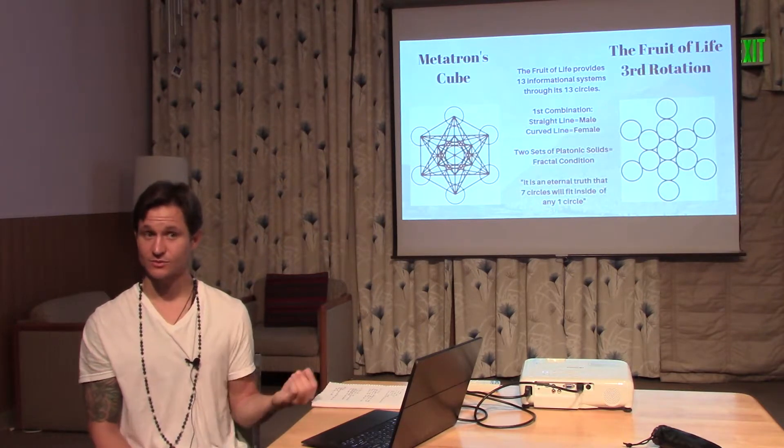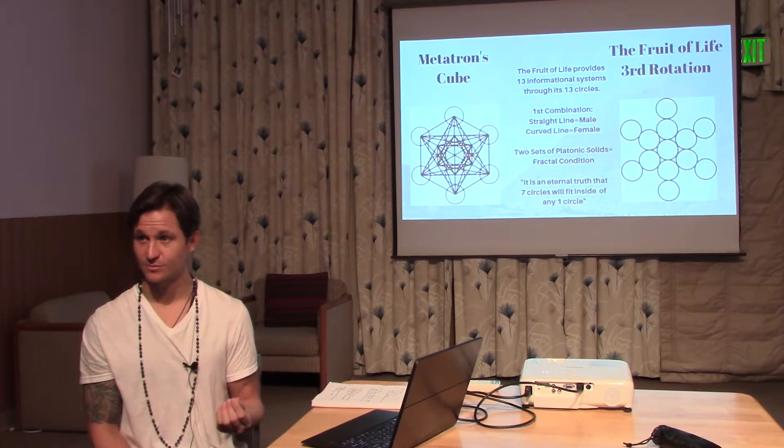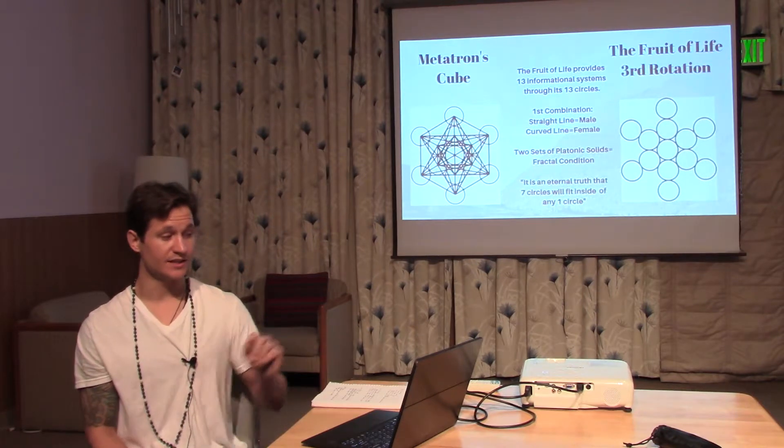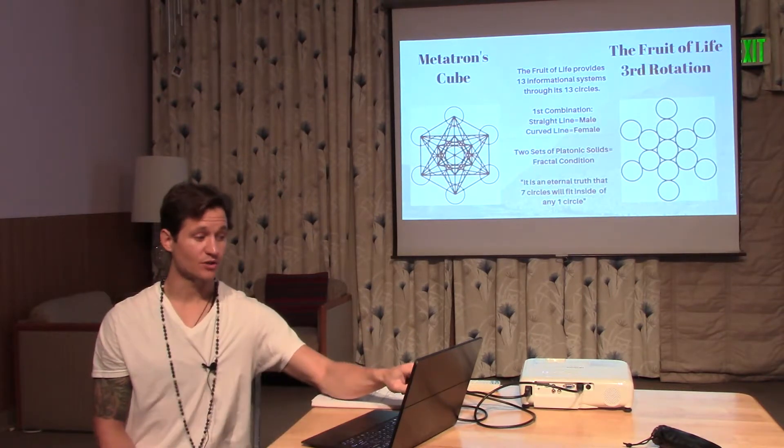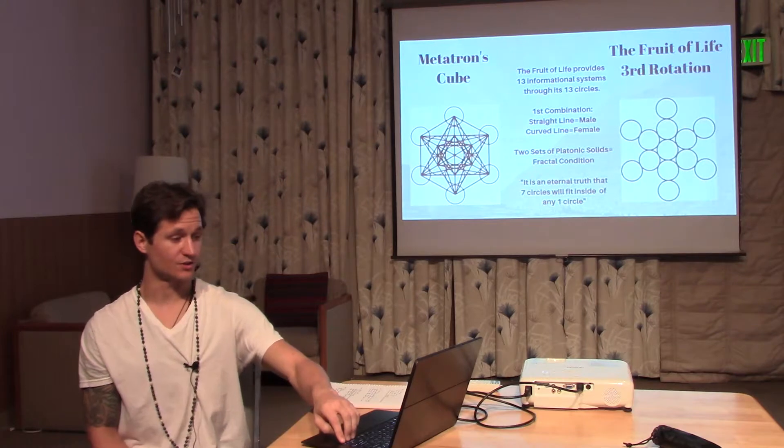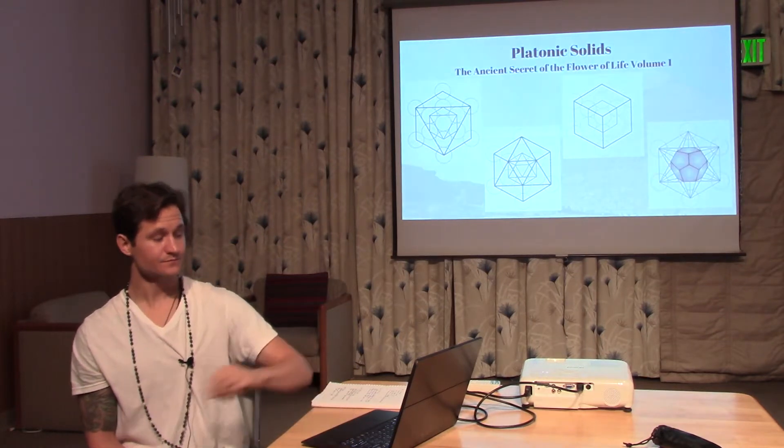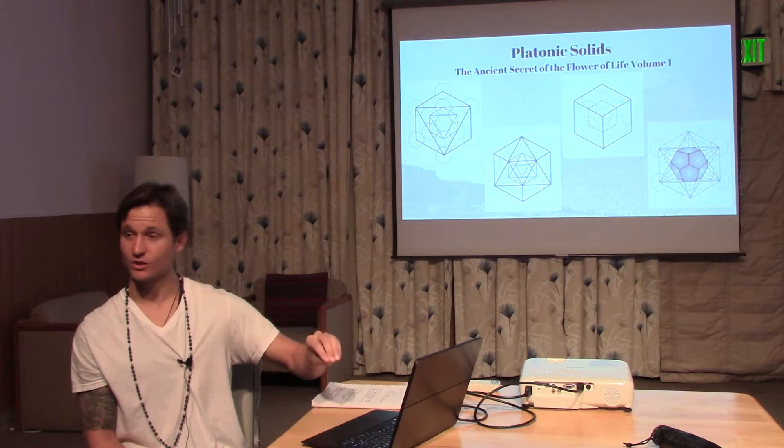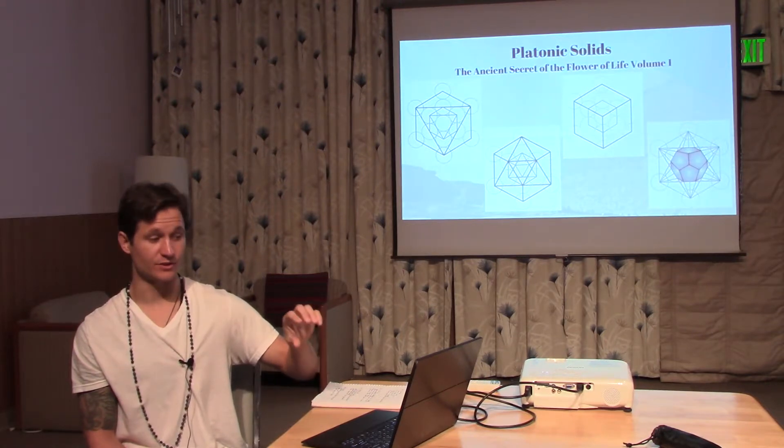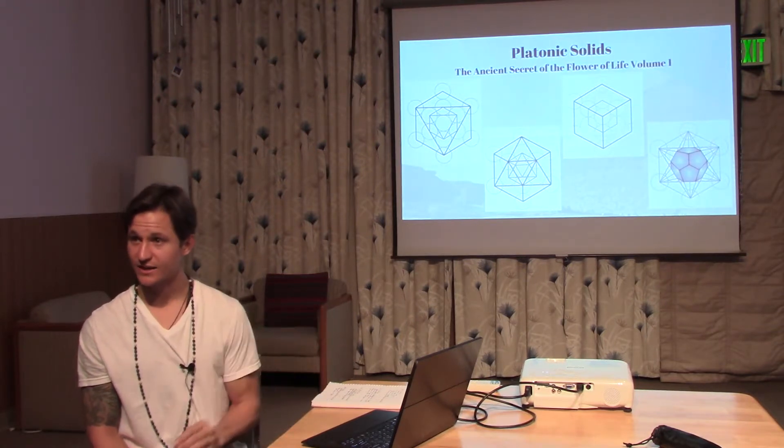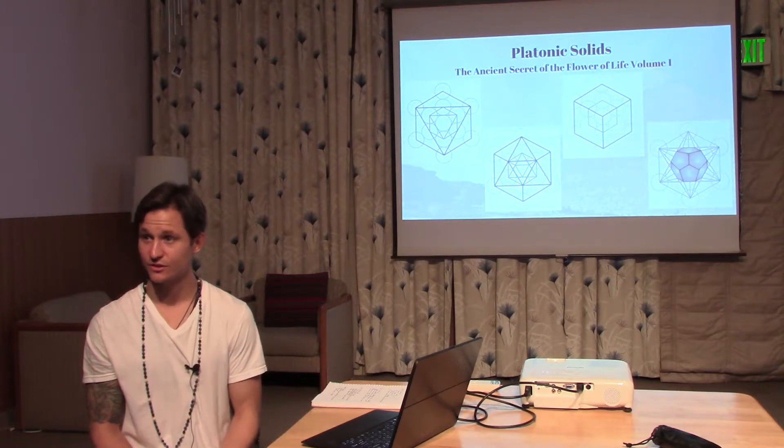Metatron's cube gives us all the shapes we just reviewed, all the platonic solids, but it gives us two sets: the smaller version and the larger version. I'll come back to this slide, but this shows how there is a smaller shape within every larger shape, and that is the fractal condition Nassim Haramain was looking for.